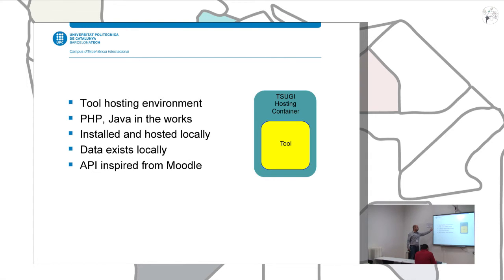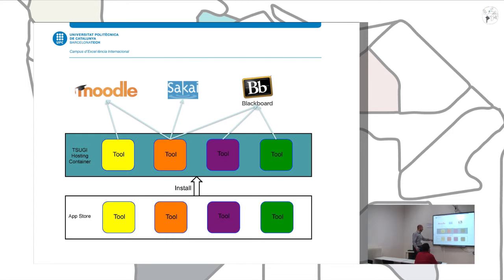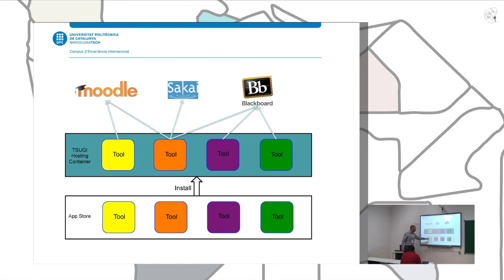Right now, the existing version of TOOGI is PHP; Java is in the works. You can install TOOGI locally, or you can also choose to install it on a cloud platform. This guarantees that you have all the data of the tool under your control. The API of the code is inspired by Moodle, so if you code in Moodle, it's easy to get into TOOGI. You can have a list of applications — like an App Store or a repository — and install the various tools inside the hosting container, which then provides all the tools for communication with different LMSs.